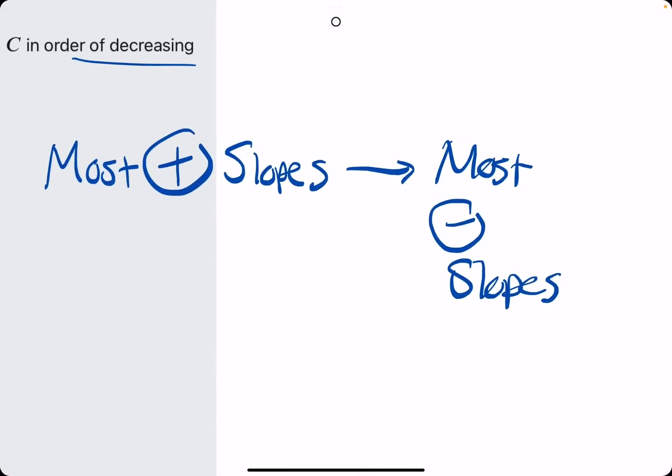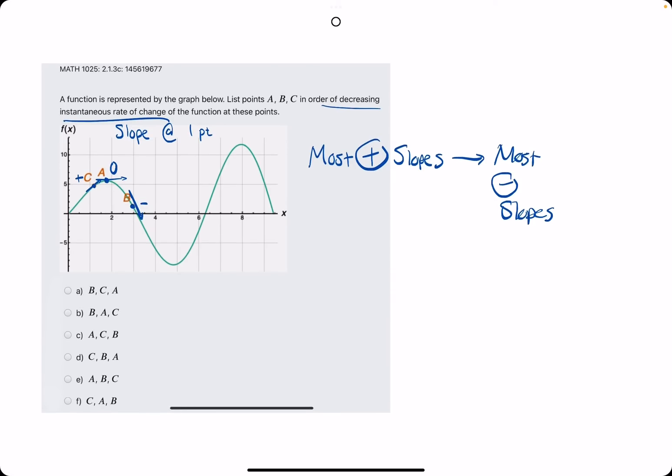So if we're ordering these slopes from most positive to most negative, we could say C has the most positive, B has the most negative, and then A is in the middle. So C, A, B would be the order of these slopes.